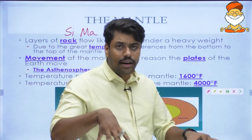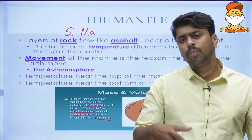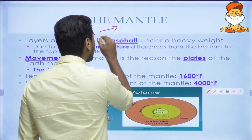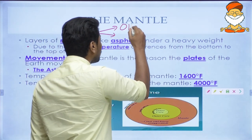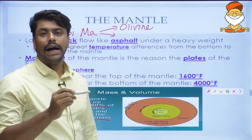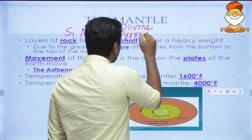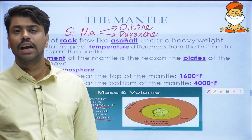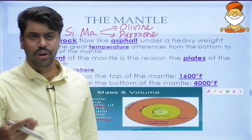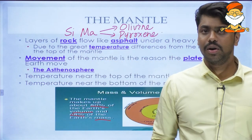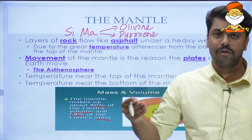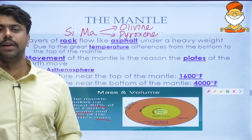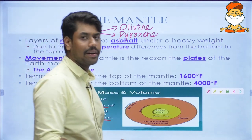There are two crystal names to remember: olivine and pyroxene. As we go deeper in the mantle, more pressure acts on the silica and magnesium, forming more of these crystals. In the deeper reaches of the mantle there will be more crystal formation than in the upper reaches, though olivine and pyroxene are present throughout.